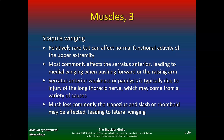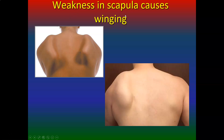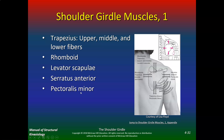Much less commonly, the trapezius and/or rhomboid may be affected, leading to lateral winging. Here's an example of scapular winging — weakness in the serratus anterior. Here's a football injury where the long thoracic nerve was injured. You can see one side is normal, but the injured side shows winging of the scapula. Whenever you see that in a patient or athlete, you need to work the serratus anterior.